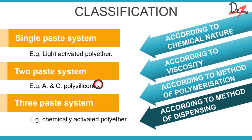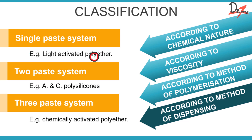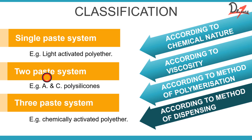The final way of classifying is according to method of dispensing. We have a single paste system, where you just have one paste and light of a certain wavelength causes polymerization. Then there is a two-paste system with a base and catalyst — addition and condensation polysilicones are available as a two-paste system. We also have a three-paste system, as with chemically activated polyether.